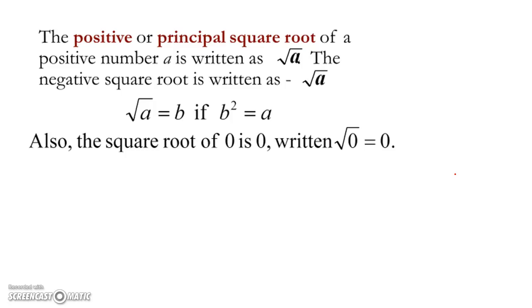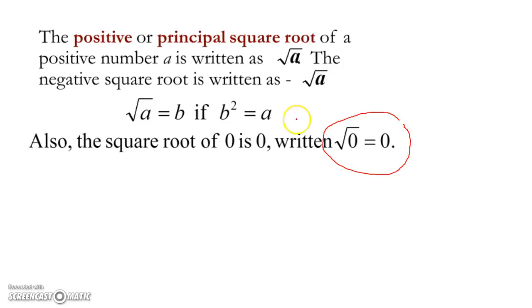Just to continue on some basics: the positive or principal square root of a positive number a is written as square root of a. The negative square root is written as the minus on the outside times the square root of a. And you should know that the square root of zero is zero.